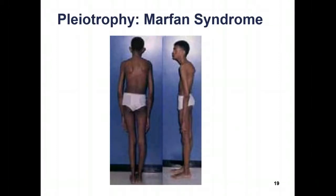Another example of pleiotropy is seen with Marfan syndrome. Marfan syndrome is a genetic disorder of the connective tissue. People with Marfan tend to be unusually tall with long limbs and long thin fingers. The syndrome is carried by the gene FBN1, which encodes the connective protein fibrillin. Marfan syndrome is a dominant genetic trait, meaning that people who inherit only one copy of the Marfan gene from either parent will develop the syndrome and be able to transmit it to their children.